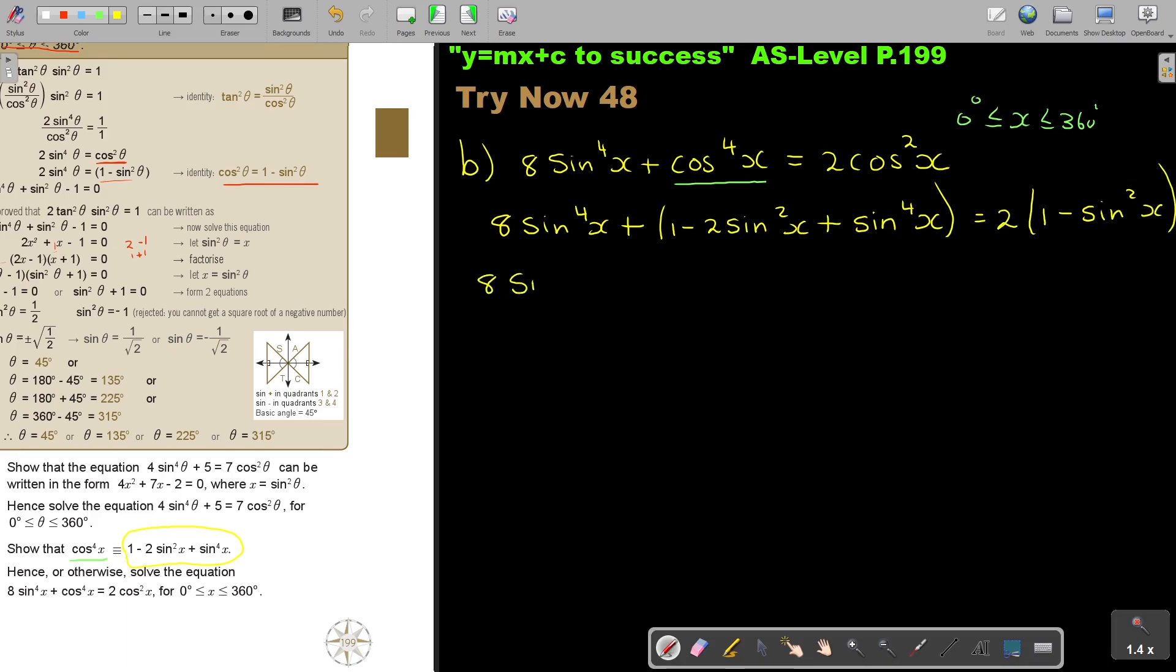So I have 8 sin to the power 4x plus 1 minus 2 sin squared x plus sin 4x equals 2 minus 2 sin squared x. And now I take everything to one side. So it's 8 sin 4x plus, I think what I'm going to do is I'm just going to try to order it a little bit. I'm going to put all that on, and then I will start with my constants.